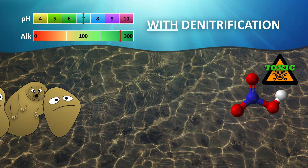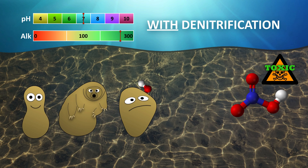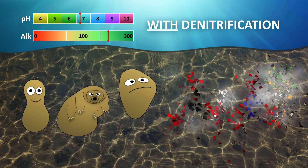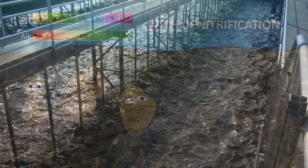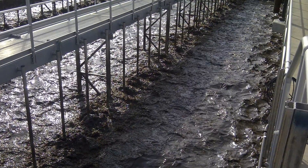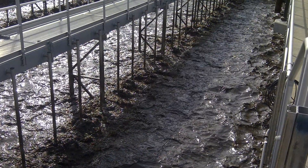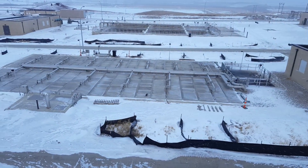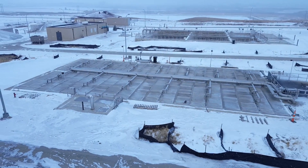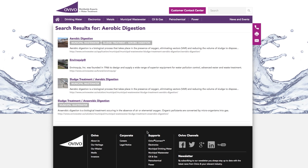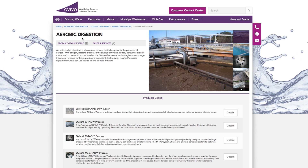Alkalinity recovery due to the denitrification step is important because it can neutralize the nitric acid created in the nitrification process. Aerobic digestion is a critical piece of many treatment plant solids handling solutions. Optimizing and operating this process can not only save operators a lot of headaches, but can also reduce cost and improve the environment. For more information, please contact your local Ovivo sales representative or visit us on our website.